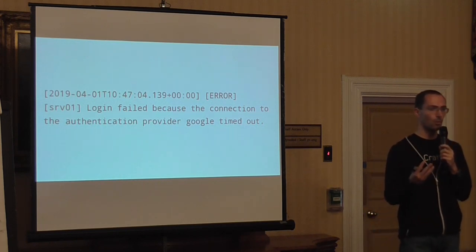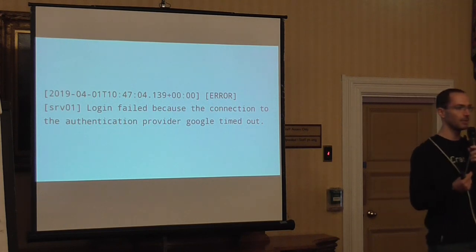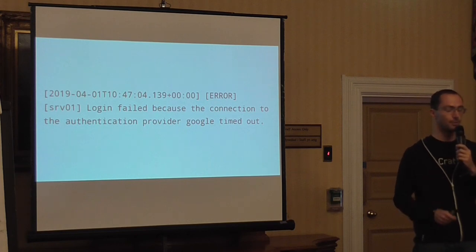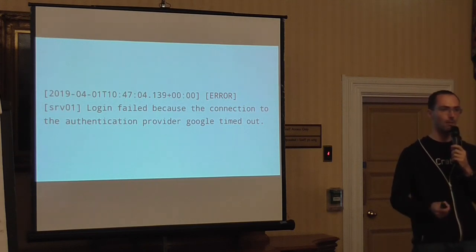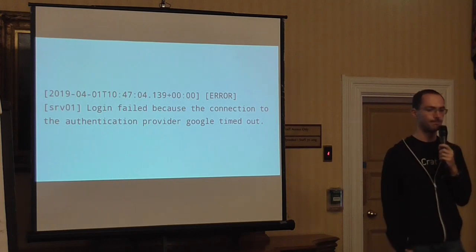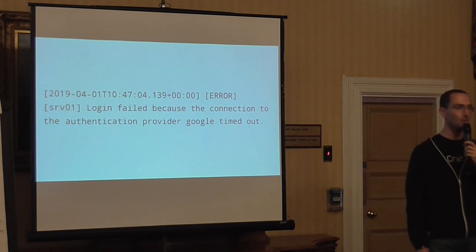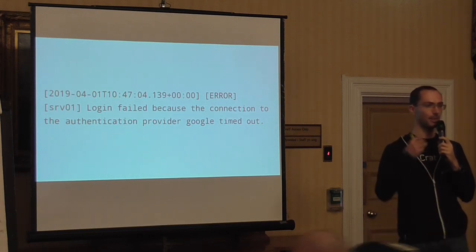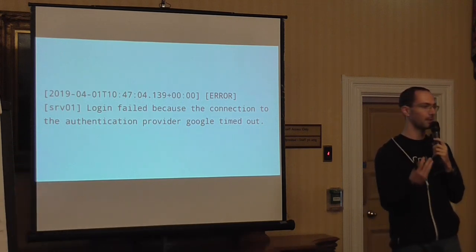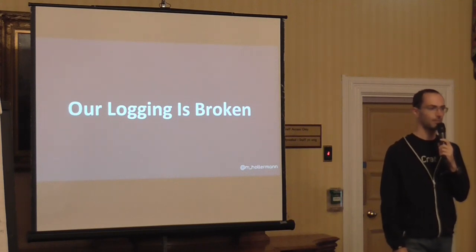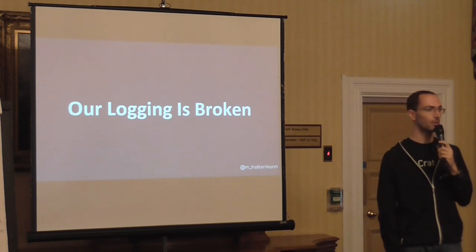When we look at this message, we can't see a whole bunch of information there. We can read that somebody tries to authenticate, tries to log into some system, and the authentication with Google failed. What does this tell us, except that the user wasn't able to log in? Well, not really anything. We can't really do anything with this message. I think our logging system and how we log these days is broken. Because when we log something and we can't do anything with it, what is the point of logging it in the first place?